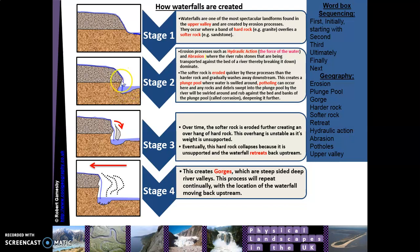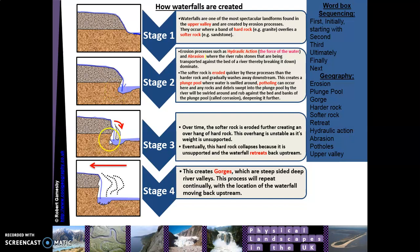Stage two: erosion of the softer rock continues and you start to get a small pool forming — we call this a plunge pool. At first it's quite small, but it will develop into a much deeper pool over time. Not much happens to the hard rock; it stays firm. But underneath, the plunge pool grows deeper because the river flows and crashes down into it, creating hydraulic action, some abrasion, and attrition as rocks break up. Where the water cuts under the hard rock, this is called the undercut.